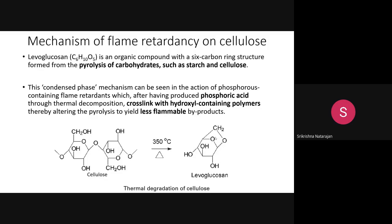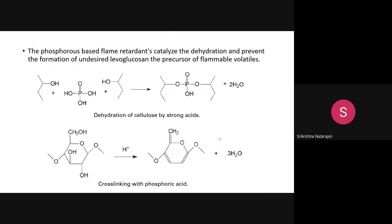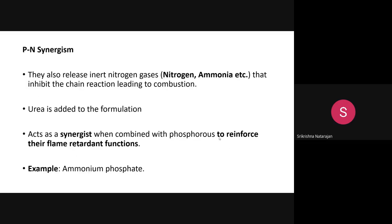Levoglucosan is a six-membered ring structure and is a very dangerous substance that promotes flammability. A phosphorus-based compound, when it forms cross-links with cellulose, prevents the formation of this undesired levoglucosan. When burned, it dilutes the flammable gases by producing phosphoric acid, which dilutes the flammable gases so it will not further promote the burning process.